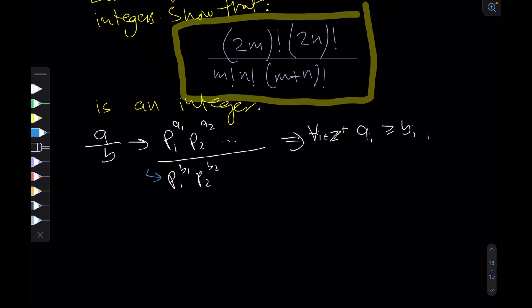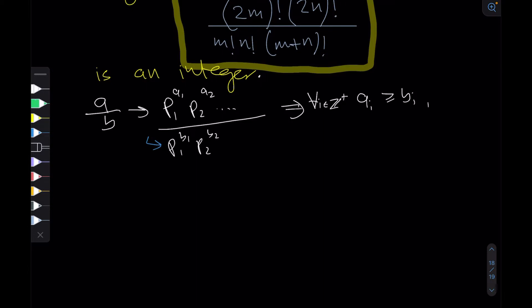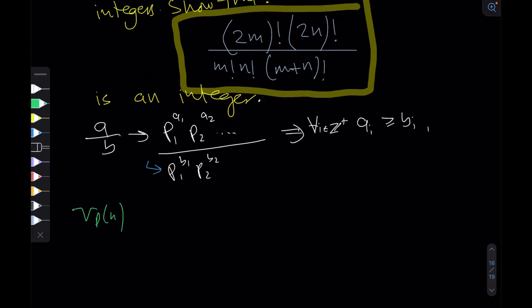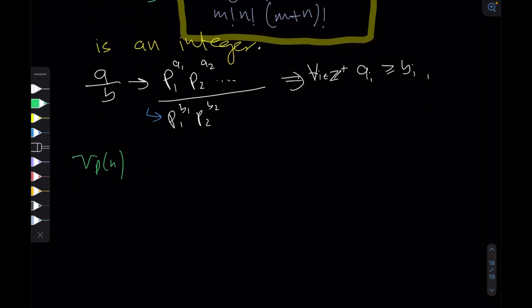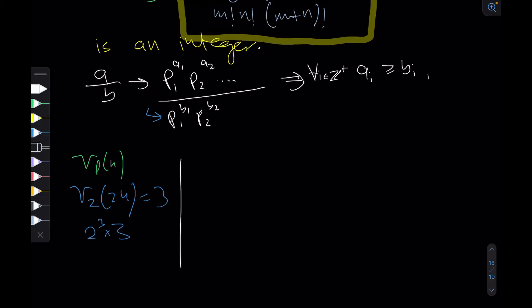Before we work directly with prime factors and powers, let's introduce a notation. v_p(n) asks: in the prime factorization of n, what is the power of p? Powers of p are important in a case like this, so there's a specific notation for it. For example, v_2(24) = 3, because 24 = 2³ × 3.